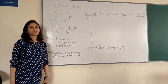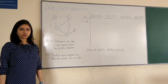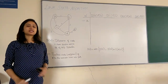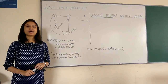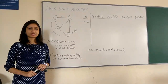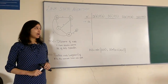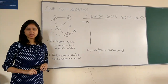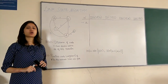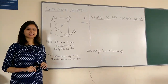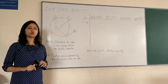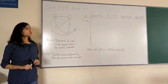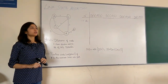Hi, today I will be teaching you Link State Algorithm. Link State uses an algorithm called Dijkstra's Algorithm, and this is a global routing algorithm, which means the least cost path is calculated with the global knowledge of the network. So let's start solving this.